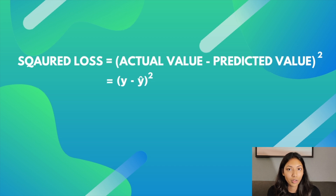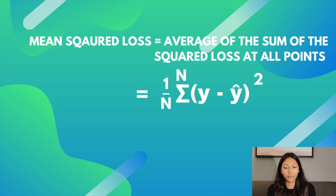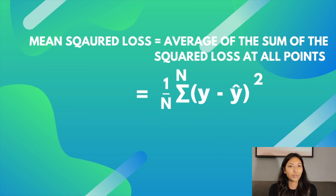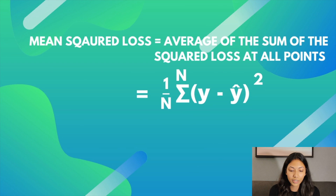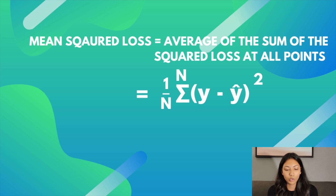If we want the squared loss for all of the points, we look at mean squared loss. Mean squared loss is the average of the sum of the squared losses at all points. You calculate the squared loss at each data point, add them all together, and divide by the number of data points, which is n. That's why we have the sum notation, and we divide the entire value by n to get the average — the mean value.